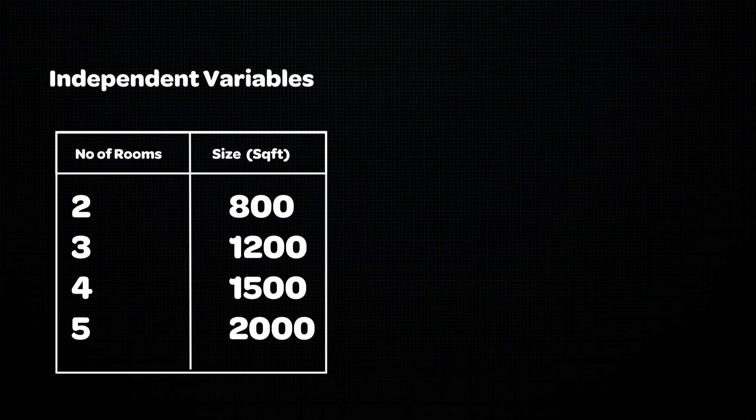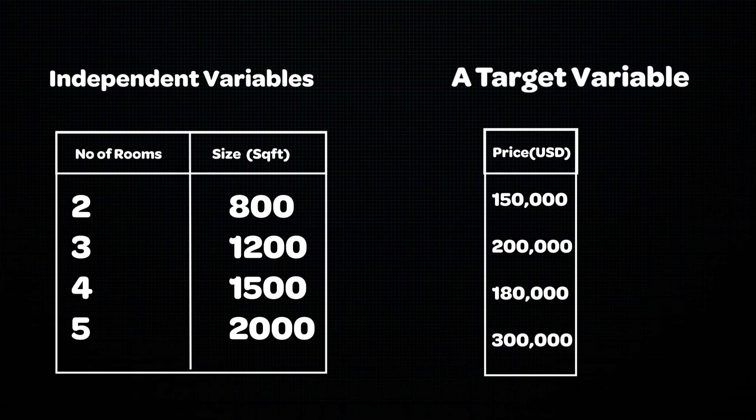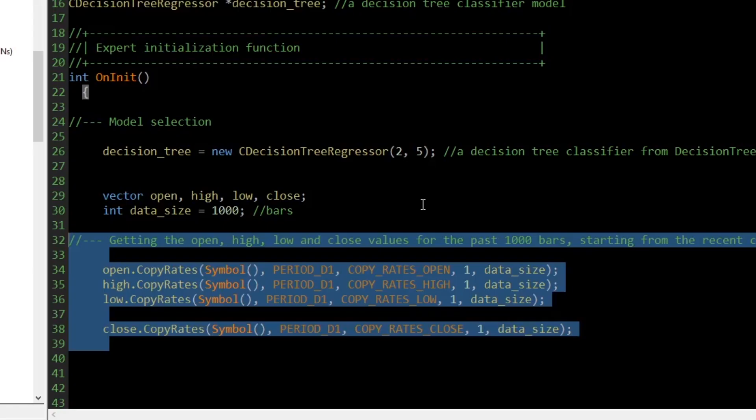The target variable in this case would be the historical prices of houses sold in the past. The target variable is one-dimensional and can be stored in an array-like vector. In this example, we are going to use the open, high, and low prices as our independent variables to try to predict what the close price could be.